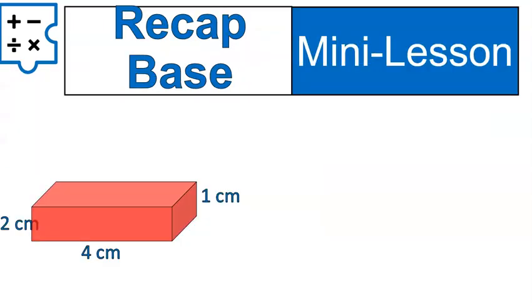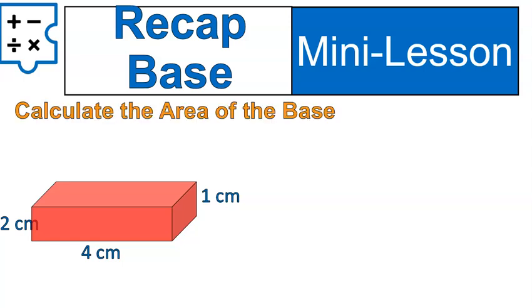Quick recap on the base of a rectangular prism. When we're talking about the base of a rectangular prism, we're talking about the area of the base, and we represent that using the lowercase letter b. In this case, the area of the base would be this.